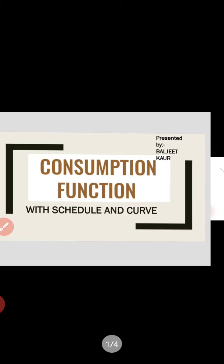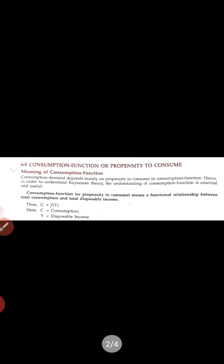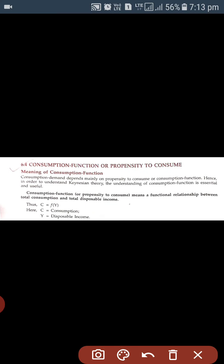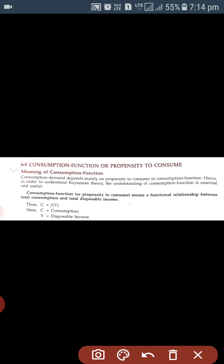We are going to discuss the consumption function. The consumption function tells us the functional relationship between total consumption and total disposable income. That is why we write the equation as C = f(Y), meaning consumption is a function of income or disposable income. Disposable income is that income which can be disposed of, meaning consumed.